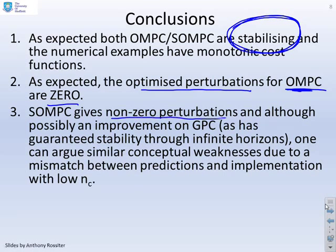SOMPC gives non-zero perturbations because your terminal mode isn't the optimal controller. And so although it is possibly, and I'm not going to say definitely, an improvement on GPC, and that's because you've got guaranteed stability, you can argue it has similar conceptual weaknesses due to the mismatch between predictions and the implementation with low NC. And that's something we're going to revisit in a later chapter.